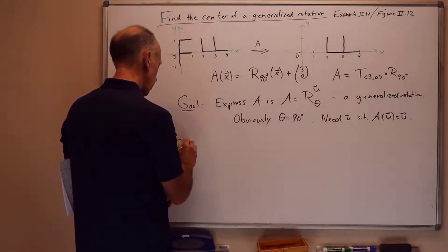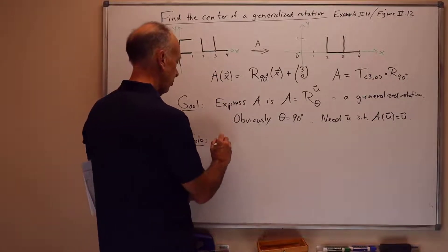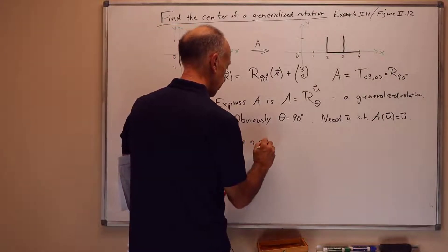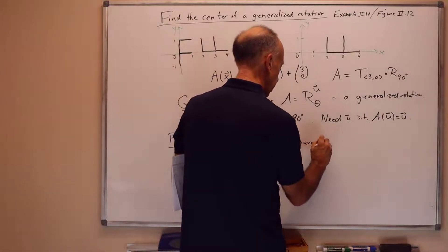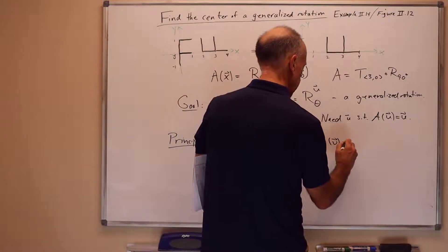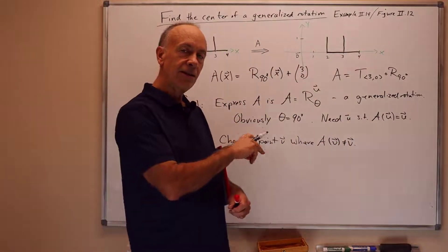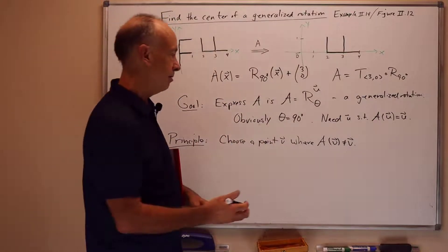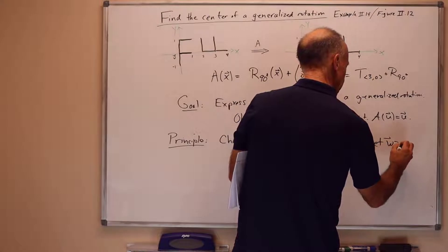So the principle is the following. We're going to choose a point v where A of v is not equal to v. Remember, we're looking for point u where A of u equals u, but suppose that's hard to find. When we start with the point v where A of v is not equal to v, and we'll let w be a name for A of v.